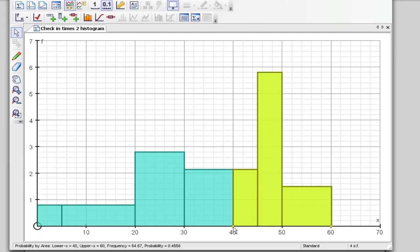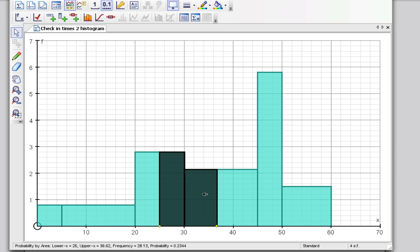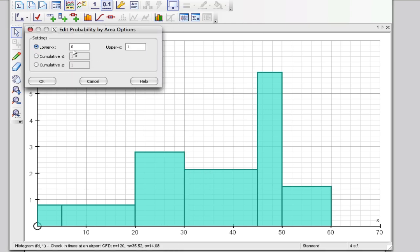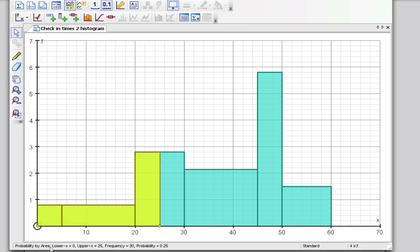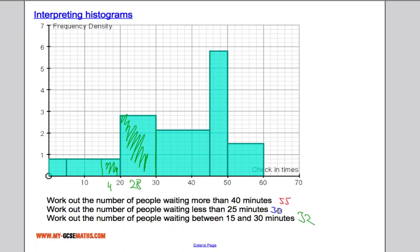And next we want the people waiting less than 25 minutes. So if we come back to Autograph, I'll just drag this over. People waiting less than 25 minutes. So that's changed to 25. In fact, let's actually just delete that and do it again. The people less than 25 minutes. We get a frequency of 30, which is what we got here.